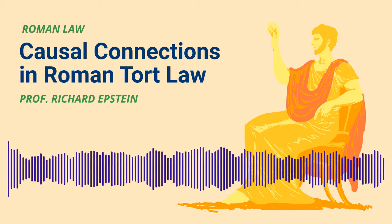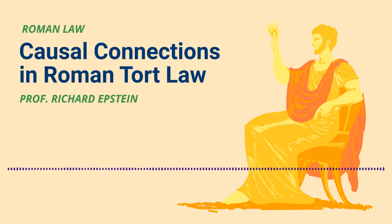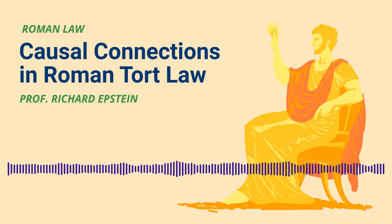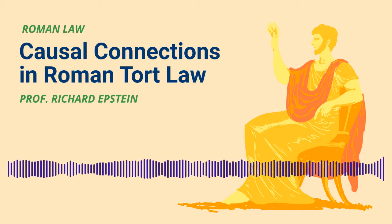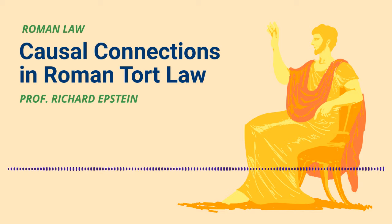Does this mean that recovery is indefinite? Of course not. What are the situations? One is: he's got an impaired boat and he sees an obstacle in front of him and decides to sail the ship into trouble. At that particular point, since he had the capacity to avoid the harm and deliberately chooses to encounter it, it's going to be on his side of the ledger, not somebody else's. And so we have one form of causal intervention which ends the chain of causation.